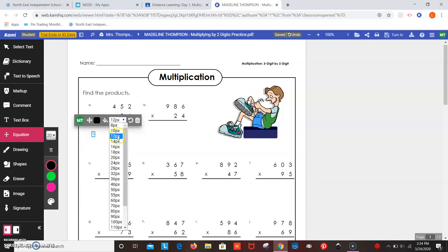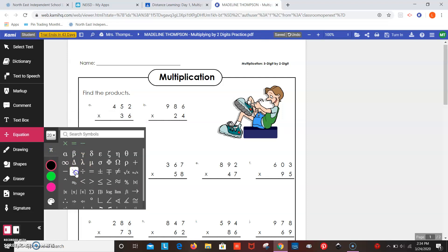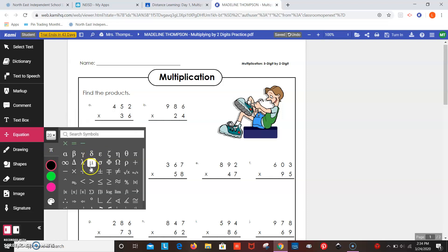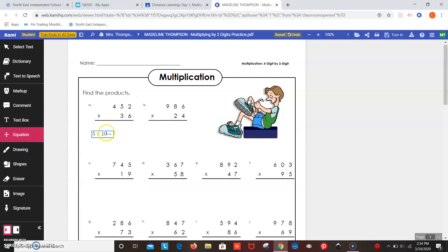I want to change it to 18, make it bigger. So I have five. Insert a symbol times 10, insert a symbol equals and click off of it 50. And there you have that.